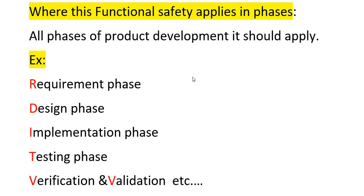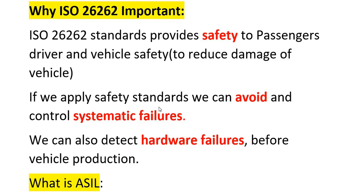ISO 26262 has 10 chapters. We can see where this functional safety applies in the product development process. Examples include the requirement phase, design phase, implementation phase, testing phase, and verification and validation phase.